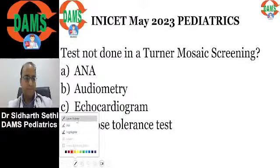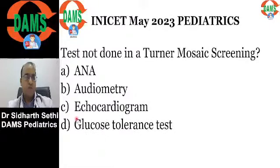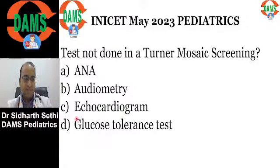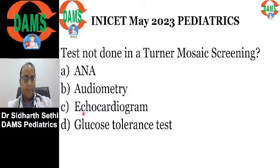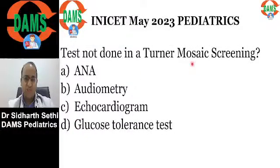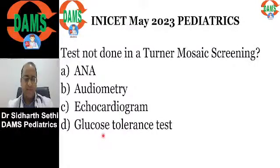We were discussing the Turner syndrome question. What test is not done in Turner syndrome, especially in a mosaic child? Remember there are many complications of Turner syndrome. Glucose tolerance test should be done because they are at risk of metabolic syndrome and diabetes.